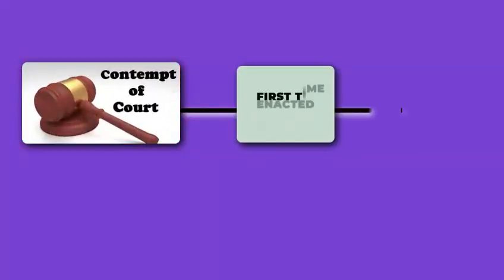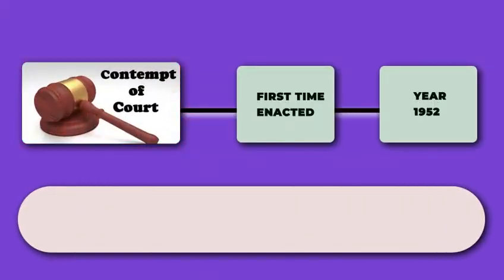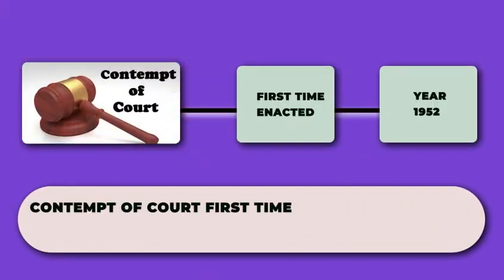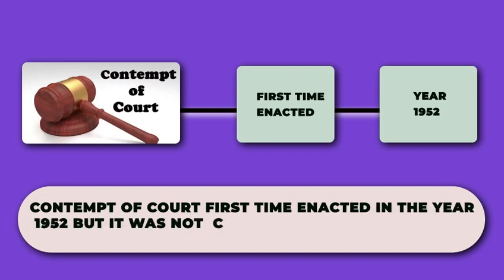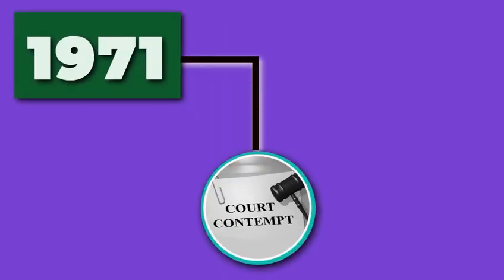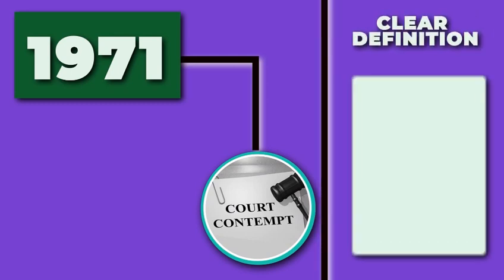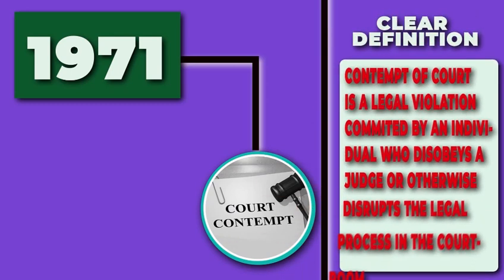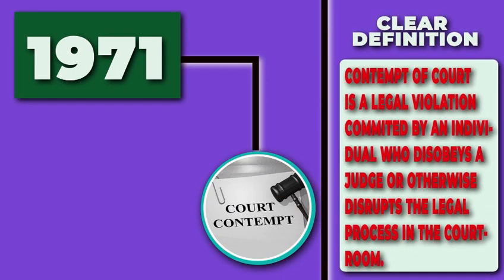The Contempt of Court Act was first enacted in 1952, but in that Act it did not define contempt of court. After that, the Act came in 1971 and a clear definition was provided — what exactly is Contempt of Court.